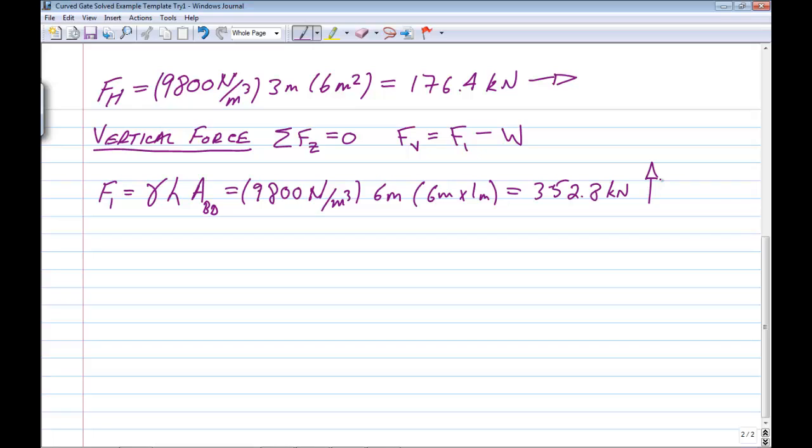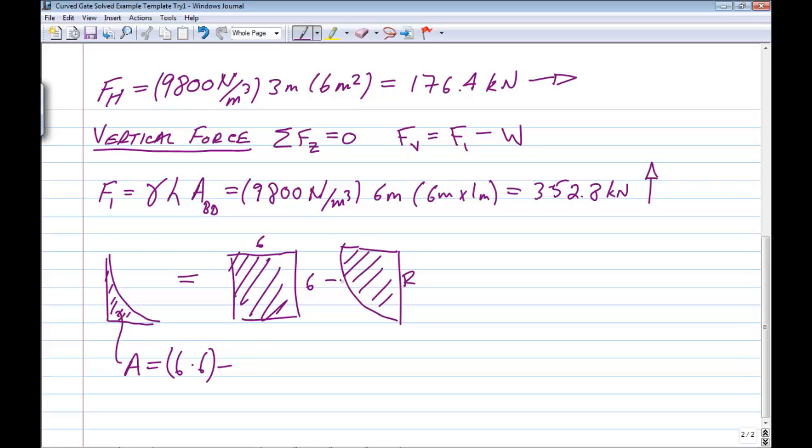And now we have to calculate the weight of that odd little shaped piece of water. We're going to do that by taking six by six and subtracting out the circle. So the area of this little section of water is going to be six times six minus the quarter circle, pi r squared divided by four, where r equals six meters.